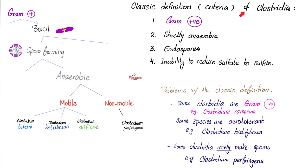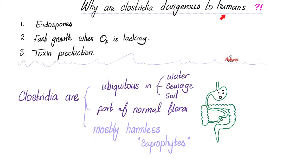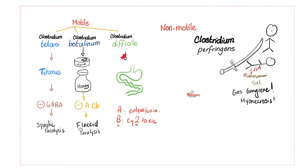What's the classic definition of Clostridia? Why are Clostridia such a big deal to human beings? Because they are everywhere around us, because they can make spores, they can produce toxins, and they can grow even when there is no oxygen.